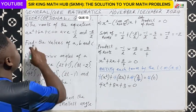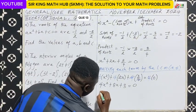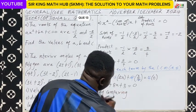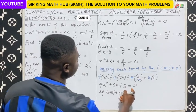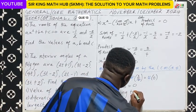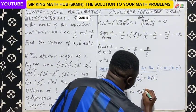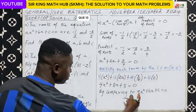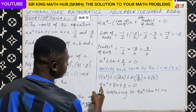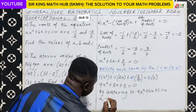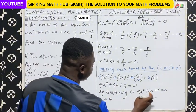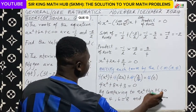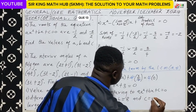Our goal is to find the values of a, b, and c. By comparing this equation to the general equation ax squared plus bx plus c equals 0: the coefficient of x squared is a, and here we have 4, so a equals 4. By comparing, b equals 8, and the constant c equals 3.